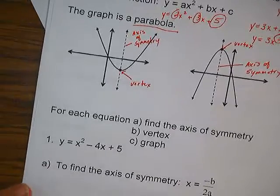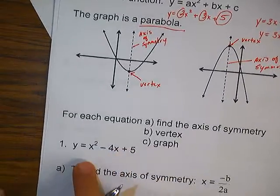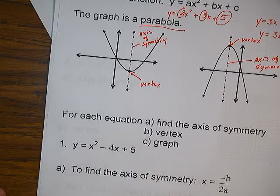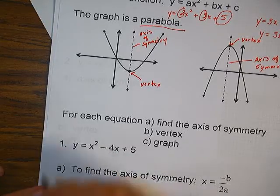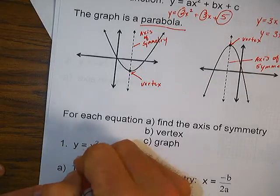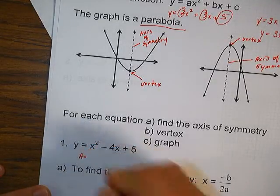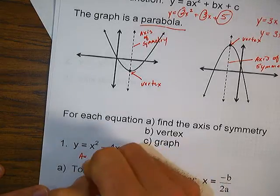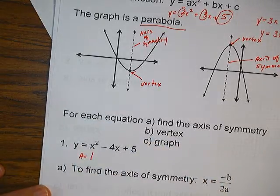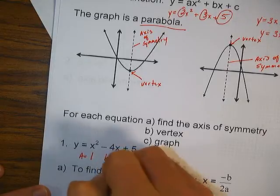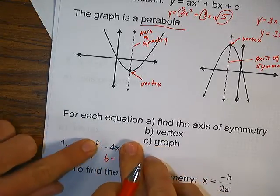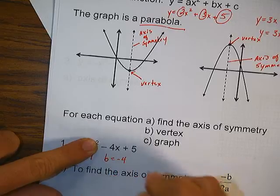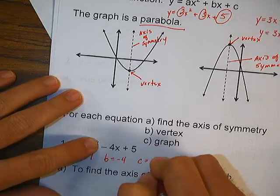In order to find the axis of symmetry, we have to know where to find a, b, and c. Here's our first equation: y equals x squared minus 4x plus 5. First thing I want you to do is label a, b, and c. The a is whatever's in front of the x squared — in this case there's an understood 1, so your a is 1. Your b is whatever's in front of the x — a negative 4. And our c is 5.